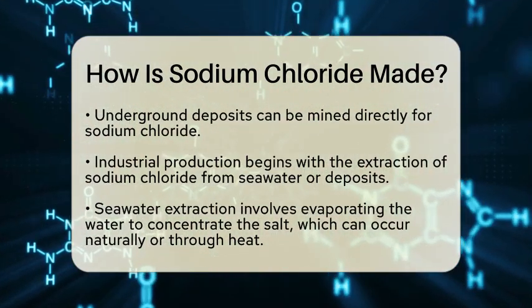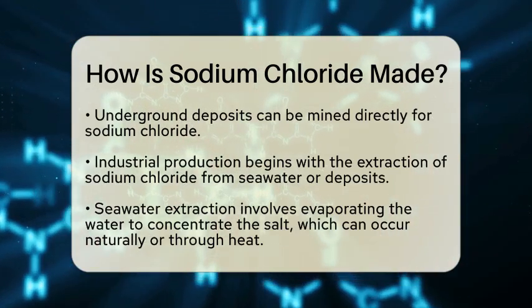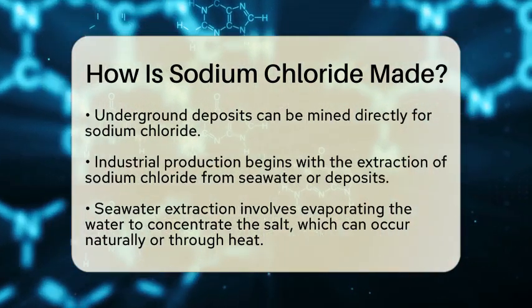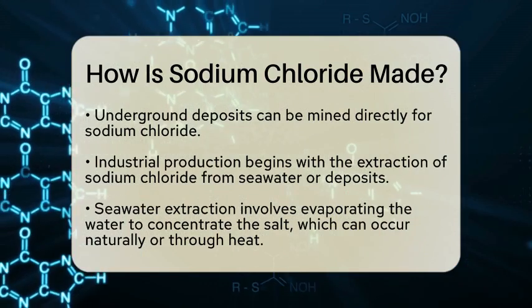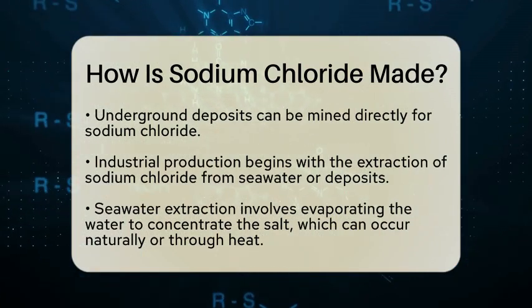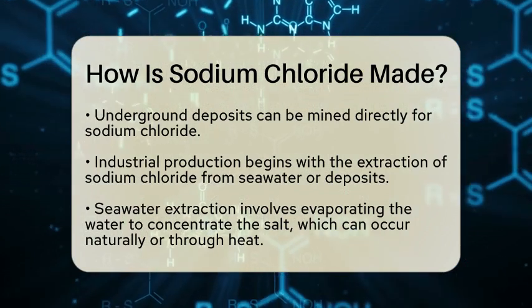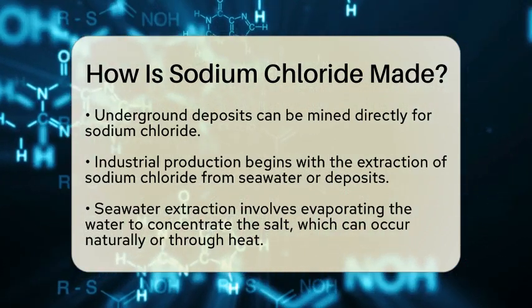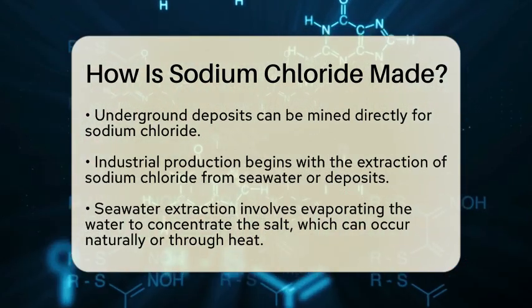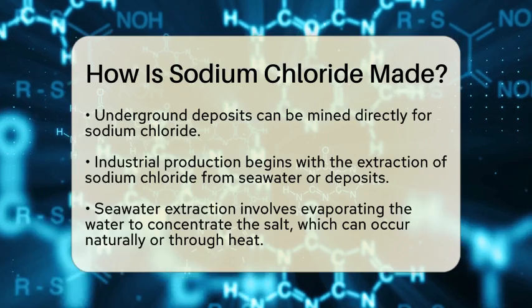Once the sodium chloride is extracted, it needs to be purified. This is done by dissolving the salt in water to create a brine solution. The brine is then filtered to remove any impurities. After filtering, the solution is evaporated or crystallized to produce pure sodium chloride.